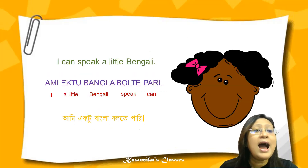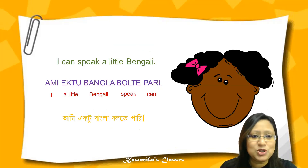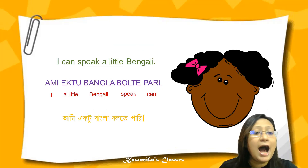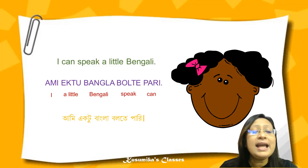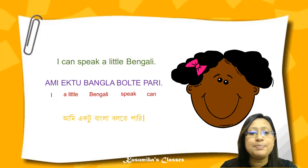I can speak a little Bengali — aami ikhtu bangla bolte pari. Aami means I, ikhtu means a little, bangla means Bengali, bolte means speak, pari means can.